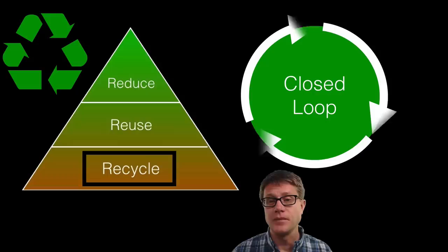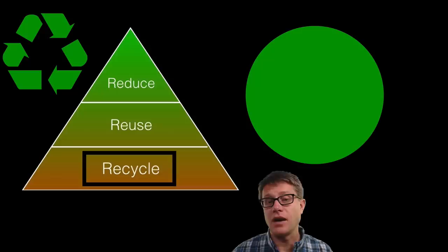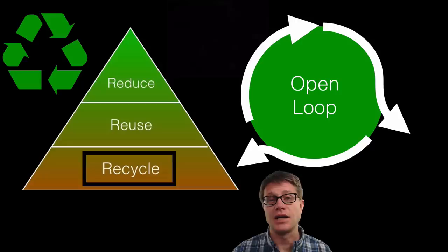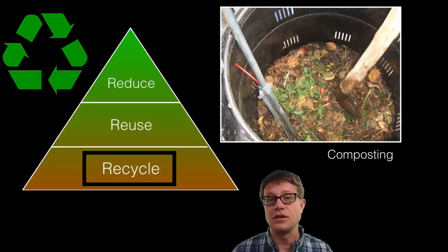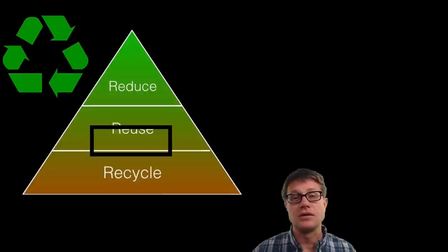We have what is called closed-loop recycling — that is where we take something like aluminum cans and recycle them back to make more aluminum cans. Then we have open-loop recycling, where we take something like plastic bottles and can use that to make more plastic bottles, or use it to make something like a polar fleece jacket. We also want to recycle nutrients. Composting in your backyard is a way to reduce the amount that goes to the landfill. At a large industrial scale, we want to take those nutrients and put them back into the environment.